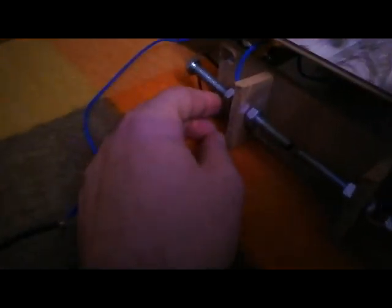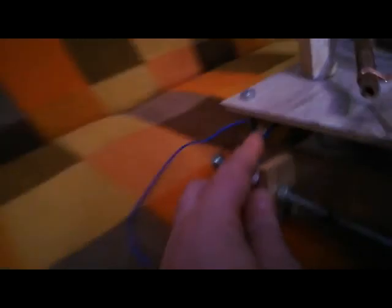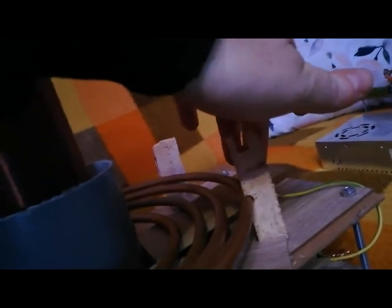Also from the left side of the spark gap we have a wire that goes to one side of the primary coil which is connected here, and the other side of the primary coil is connected to the other side of the spark gap.